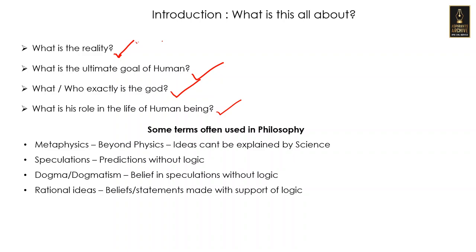Before going further, let me explain a few terms that surface very often in philosophical discussions — having a good grip on these terms will be helpful. The first one is metaphysics. In the word 'metaphysics', 'meta' means beyond and 'physics' means science. So metaphysics is the area of study that examines ideas which cannot be explained by science or demonstrated practically. Metaphysics tries to examine the validity of such ideas or beliefs with the help of logic.